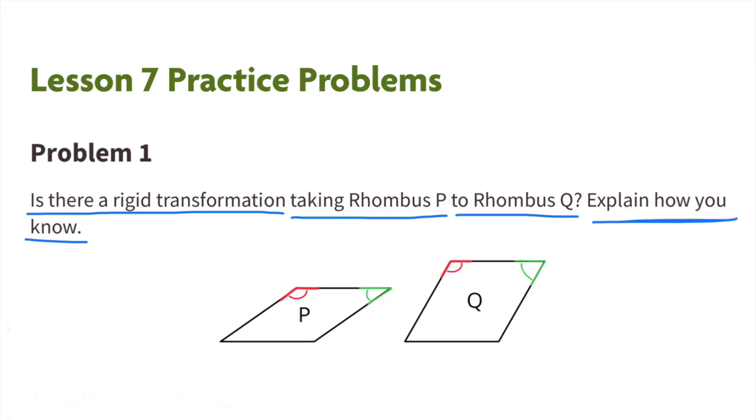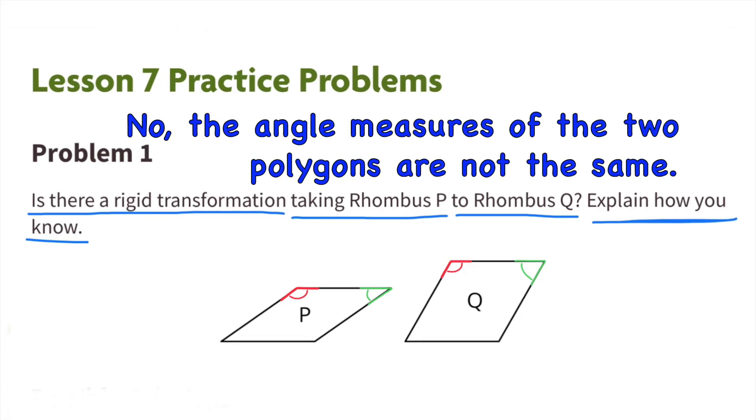Notice the corresponding angles in red and the corresponding angles in green. They're different measures. No, the angle measures of the two polygons are not the same.